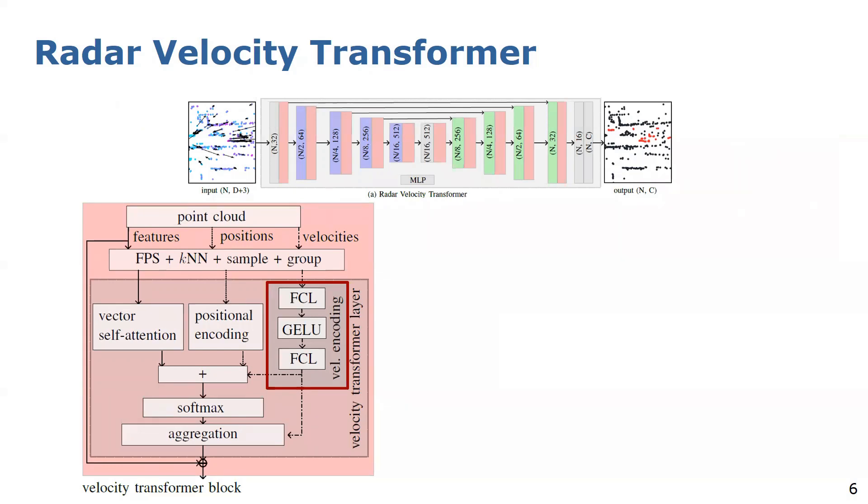The velocity encoding is embedded into our velocity transformer block which adopts the vector self-attention with relative velocity encoding. The input to the additional velocity encoding is the relative velocity of the individual points, the so-called radar detections. The calculation is restricted to local areas to reduce the computational burden which we determined by farthest point sampling and KNN search. Afterwards, we process the relative velocities by two fully connected layers and the GeLU activation functions. We add the velocity encoding to the attention weights and further aggregate the encoding with the values to include the valuable information.